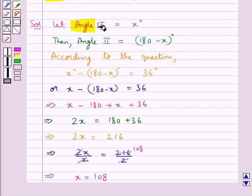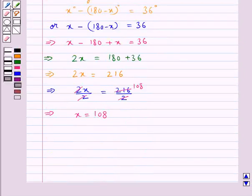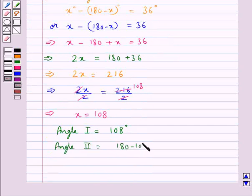We have taken angle I to be x degrees, so we now get angle I equals 108 degrees. Then angle II would equal (180 - 108) degrees, and that equals 72 degrees.